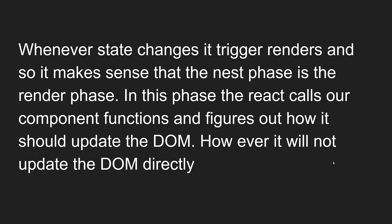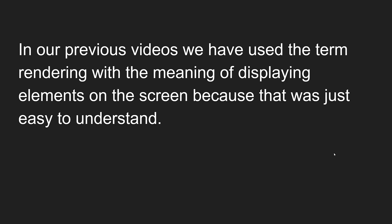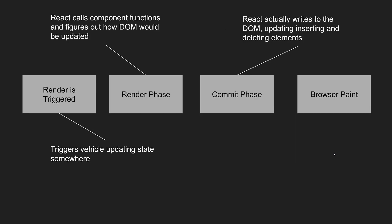So in summary: whenever any state changes, rendering is triggered. Then the render phase runs — calling all component functions and figuring out how to update the DOM. Afterwards, it enters the commit phase, where it actually writes to the DOM — inserting, updating, or deleting elements. Finally, the browser repaints the screen. If you have any doubts, please post comments below. If you liked this video, please subscribe to my channel. Thank you!